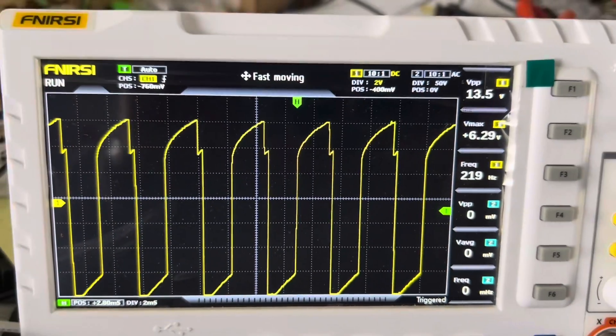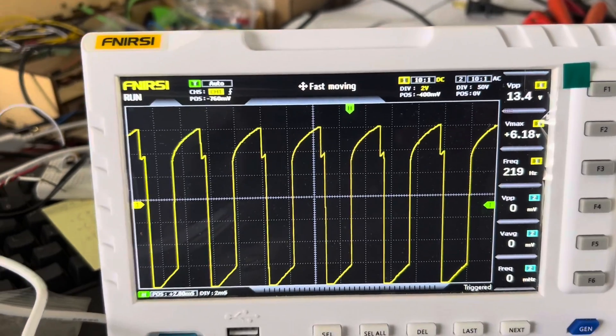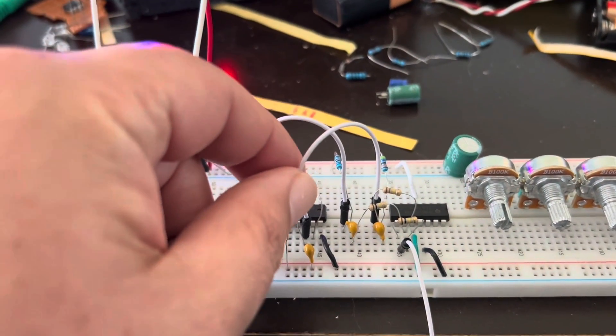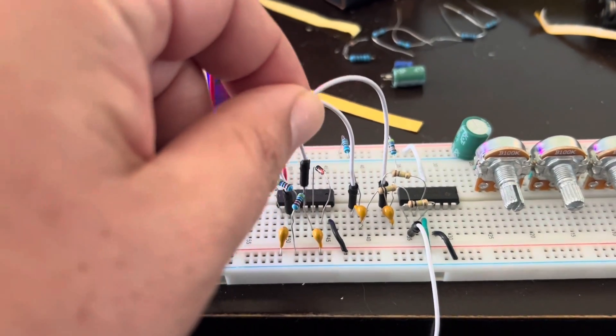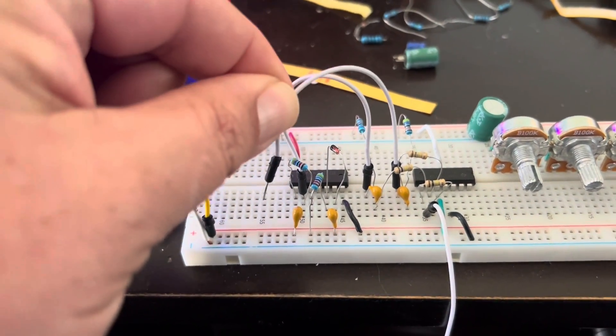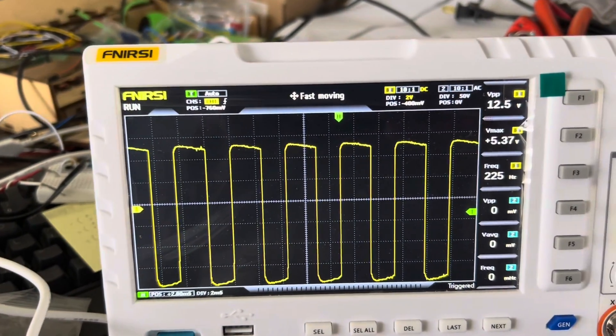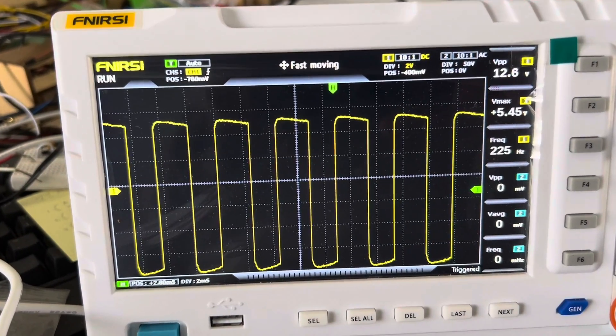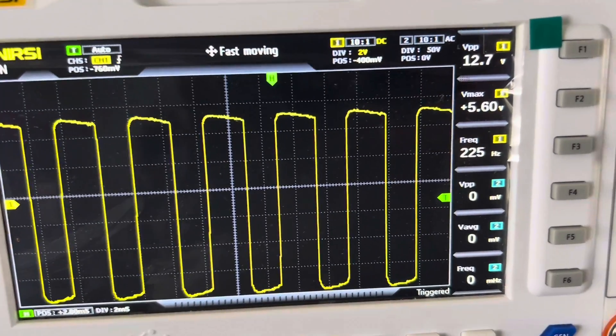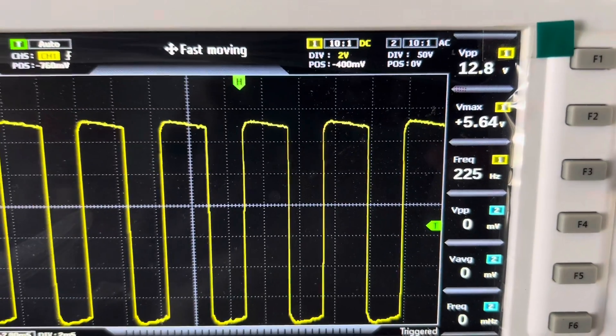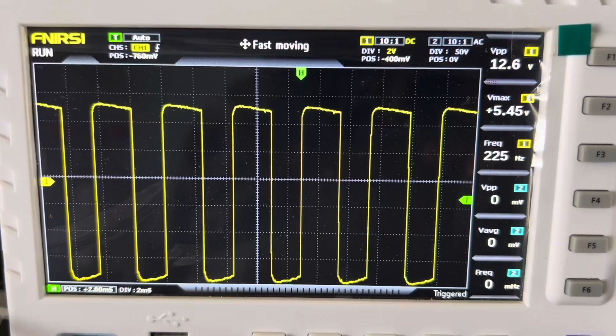Now, if I take this guy, the sawtooth wave oscillator, and if I put it to ground here, you just get that one signal, the square wave from the original oscillator, with no loss of volume, no loss of strength of the signal of 12.8, 12.6 volts here.